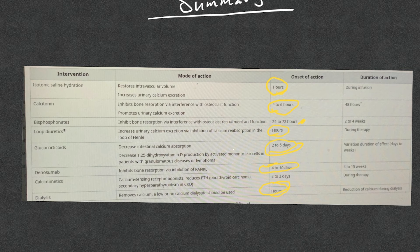Duration of action: IV fluid during infusion, calcitonin for 8 hours, bisphosphonate 2 to 4 weeks, and loop diuretics similar to fluid during therapy, and denosumab 4 to 15 weeks. Another important thing here about calcitonin, which I forgot to mention, that calcitonin should not be used more than two days because of the risk of tachyphylaxis.